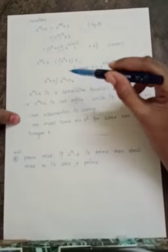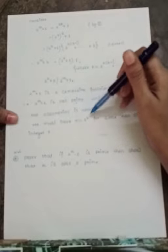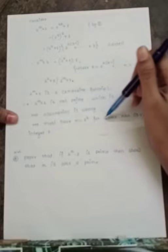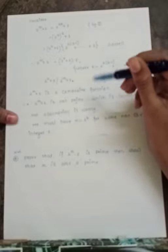Hence our assumption is wrong. We must have m = 2^k for some non-negative integer k.